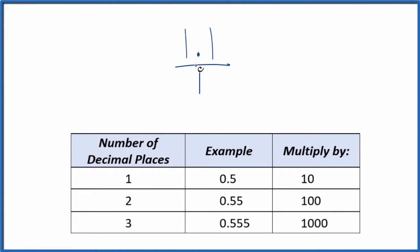What I want to do is get rid of the decimal here. I see I have one decimal place. If I have one decimal place, I'm going to multiply by 10. So when I multiply by 10, 10 times 1.1, that equals 11, and that gives me a whole number.